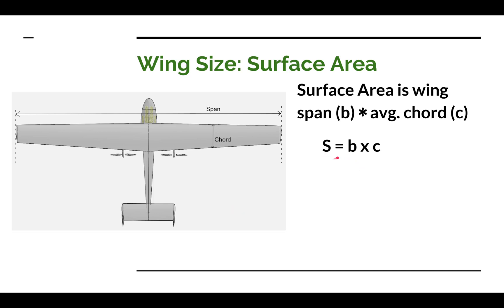If you look over here, this big S is the symbol we use for surface area. B is the span — the distance from one tip of the wing to the other tip of the wing. C is the chord — the average distance from the leading edge of the wing to the trailing edge of the wing.